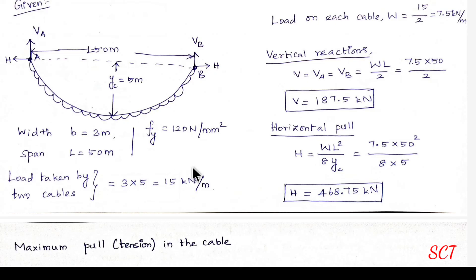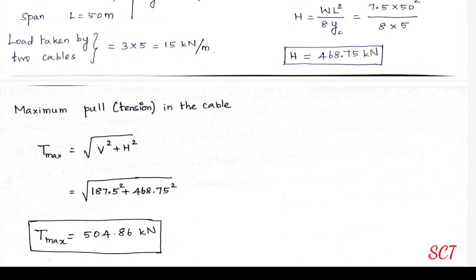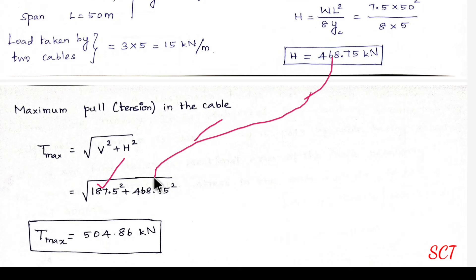The maximum tension formula is T_max = √(V² + H²). Substituting V = 187.5 kN and H = 468.75 kN and solving, the maximum tension T_max = 504.86 kN. This is the tension acting in the cable.